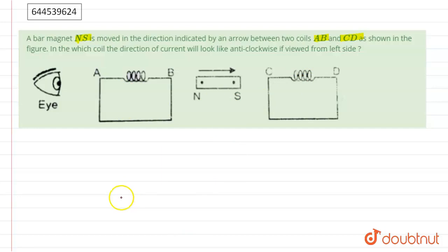The direction of induced current is such that it will resist the change in flux. So in AB, it wants to increase the flux because the magnet is moving away from it.